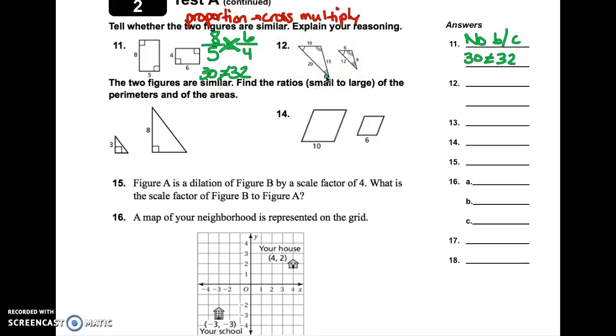Number 12 is going to be the exact same setup. Now, if you notice on number 12, they give you all of the sides of the triangles. You only need to pick two of them, obviously, to set up your fraction. But they can be any two that you want. So, let's say for the bigger triangle, we use 10 over 20. Now, if I do that, you want to look at what corresponds with 10, and that would be 6. And then what corresponds with 20? That would be 12.